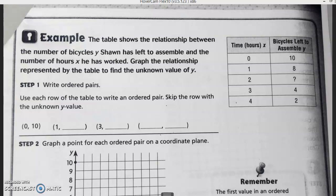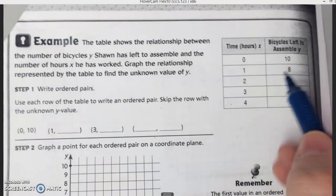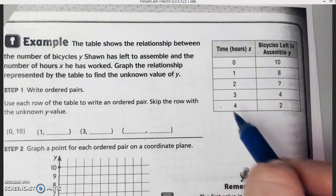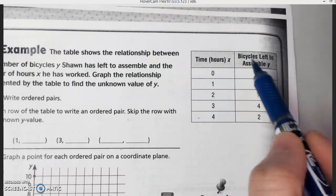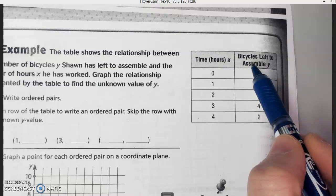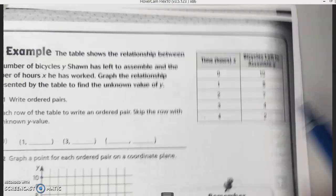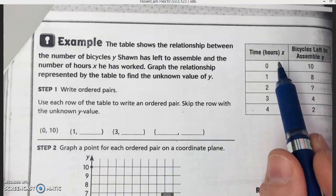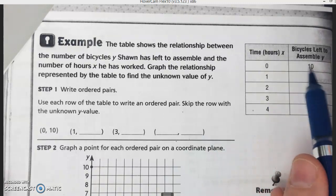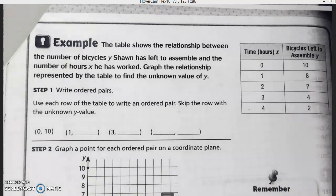The table shows the relationship between the number of bicycles, Y, Sean has left to assemble, and the number of hours, X, he's worked. Graph the relationship represented by the table to find the unknown value of Y. First, we're going to write our ordered pairs based on this. They've told us that X is time in hours, so these are my X values. And the Y would be the bicycles that are left to be assembled. When time is zero, meaning this is what we're starting with, we have ten bicycles we need to assemble.